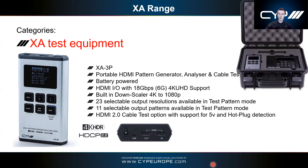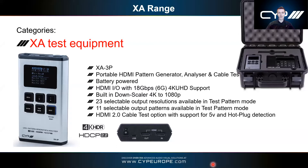Every single unit comes with a carry case. The case holds the XA3P — the portable unit — and there's a slot for its bigger brother the XA4. If you don't have an XA4 you can use that space for HDMI cables or other accessories. Just to note: the XA3P has 23 output resolutions and 11 test patterns — bear that in mind when we compare it to the XA4.